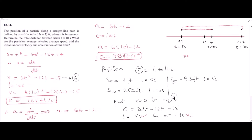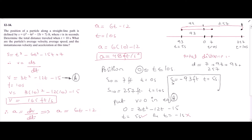For the total distance: the particle first moved 7 feet backwards from its starting position, then 93 feet from the origin in the negative direction — distance is always positive. Then it moved forward 93 feet back to the origin, plus an additional 257 feet in the forward direction. So total distance = 7 + 93 + 93 + 257 = 450 feet.